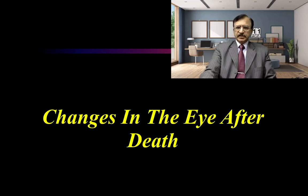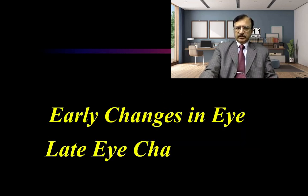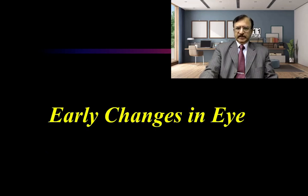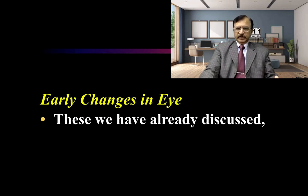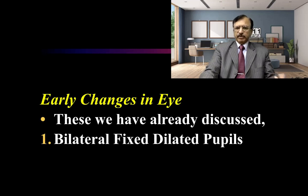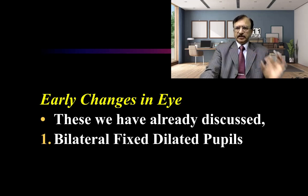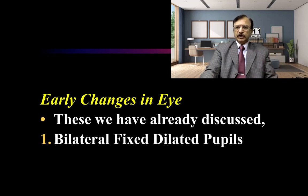Starting with the early changes in the eye after death. As discussed in previous lectures, there is bilateral fixed dilated pupils. When we throw light in the eye, the pupils constrict normally when the person is living, but after death they remain dilated — they do not respond to the light thrown into the eyes.